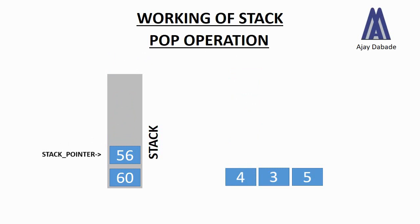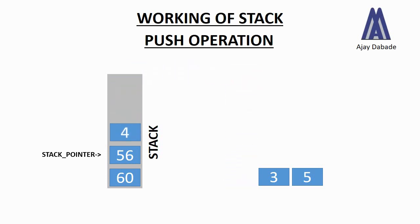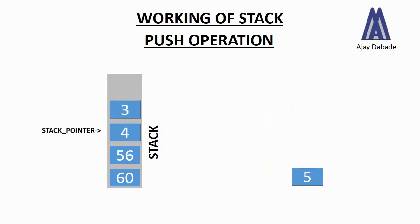Now let us perform the push operation again and see what happens. We will push the number 4 onto the stack — this is the same number we had popped out, but you can push any number. So we push number 4 and the stack pointer will get incremented. Then we push number 3 and the stack pointer increments again. So every time you push a number, the stack pointer gets incremented, and every time you pop, it gets decremented.